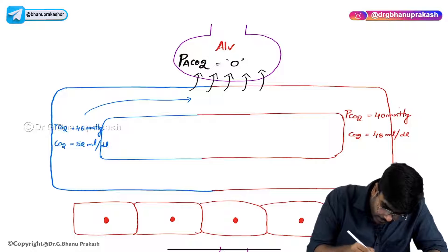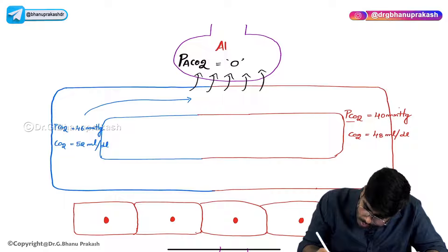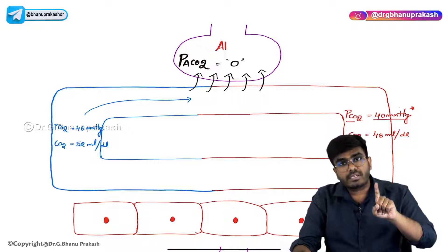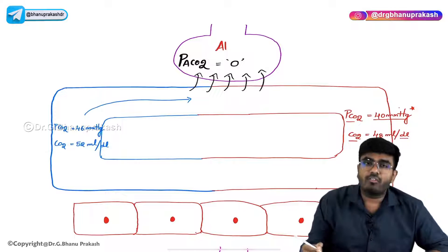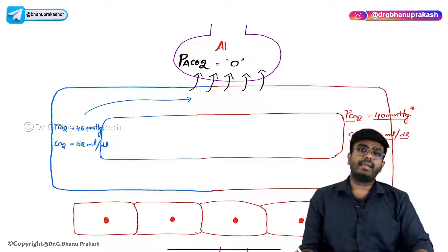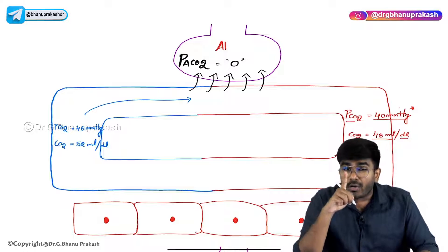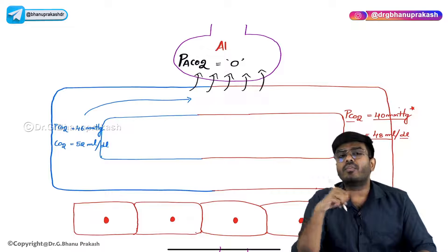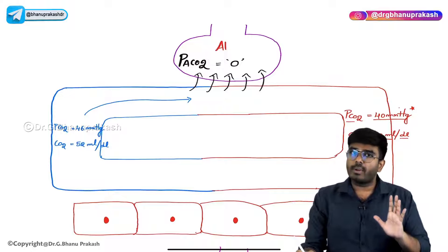In arterial blood, the partial pressure of carbon dioxide is 40 mmHg. In 100 ml of arterial blood there is 48 ml of carbon dioxide. Now it sounds surprising - in 100 ml of oxygenated blood, how much oxygen is there? 20 ml of oxygen. But there is almost 48 ml of carbon dioxide. So 100 ml of arterial blood is carrying 48 ml of carbon dioxide.